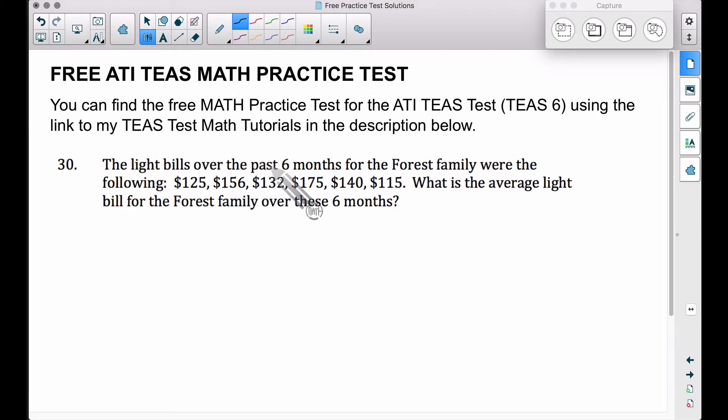Number 30, the light bills over the past six months for the Forrest family were the following: $125, $156, $132, $175, $140, $115. What is the average light bill for the Forrest family over these six months? The average in this case is the same thing as finding the mean.